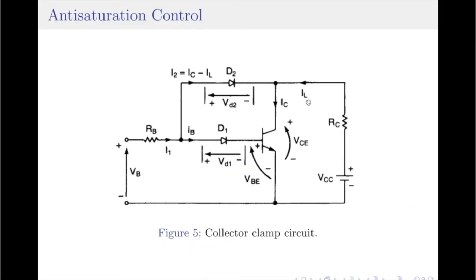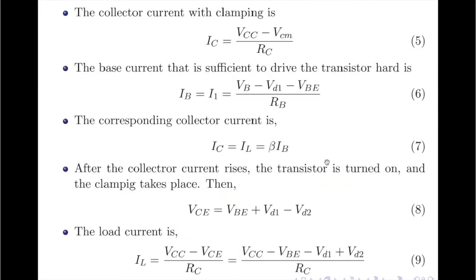In a very similar fashion, we can write an expression for the load current IL. Please note it is now different from the collector current IC because diode D2 is turned on — this is our clamping diode. The equation for IL is obtained by applying KVL to the collector-emitter circuit: IL = (VCC − VCE) / RC. Substituting the equation for VCE, the load current equation becomes IL = (VCC − VBE − VD1 + VD2) / RC.